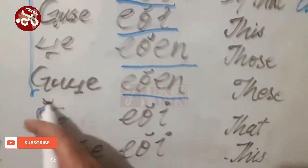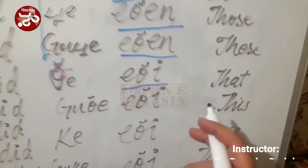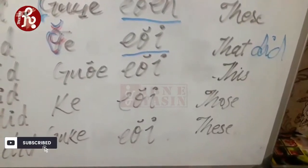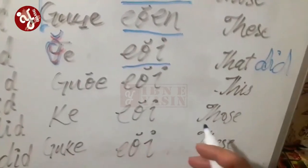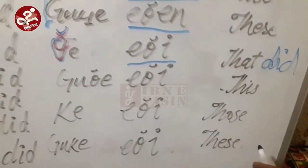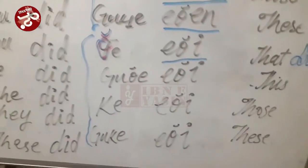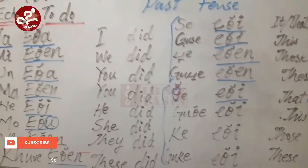After that, we discuss fluid, foldable, or soft things. 'Te eti' means 'they did' — for example, if water did something, you say 'te eti'. 'Gute eti' means 'this did'. 'Ke eti' means 'those did'. 'Guke eti' means 'these did'. These four forms are for non-living beings — fluids, clothes, foldable or uncountable things.